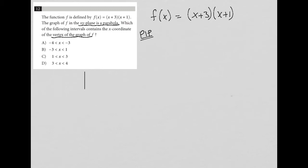I'm going to draw my xy-plane here and figure out what I know about this parabola. I know this function. I know that it's f(x) = (x+3)(x+1). How can I use that?